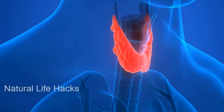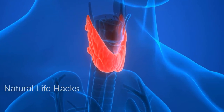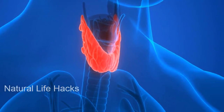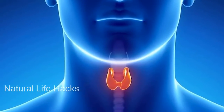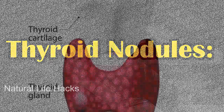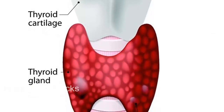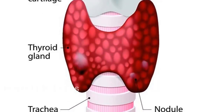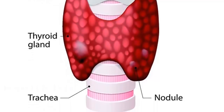Goiter is an enlargement of the thyroid gland, mainly due to iodine deficiency in the body or hyperthyroidism. A thyroid nodule is the growth of a fluid-filled cyst or thyroid tissue on the thyroid gland.